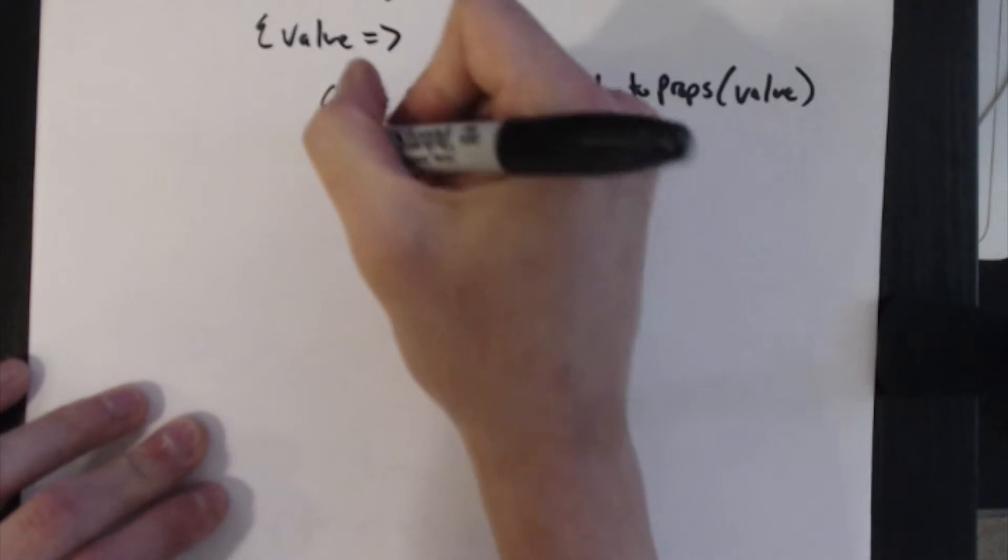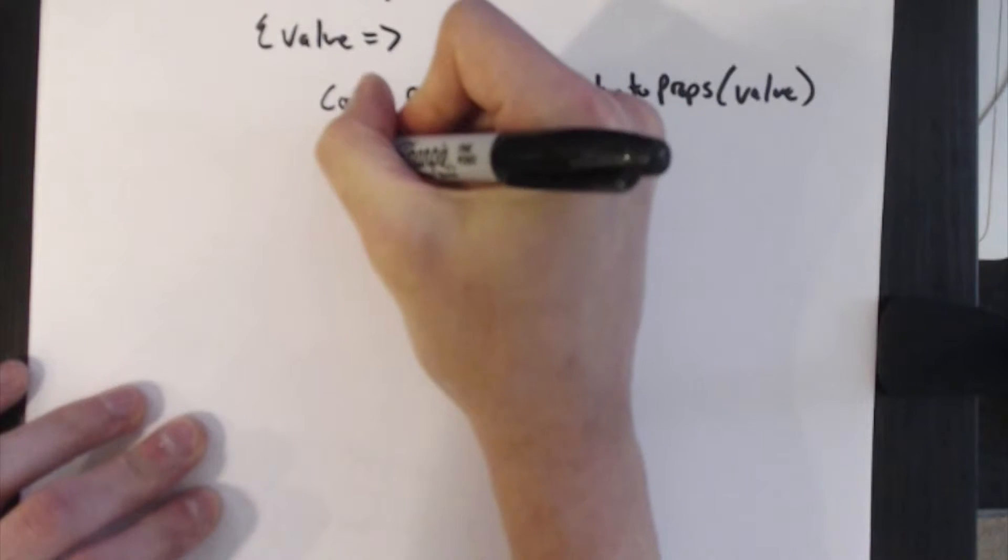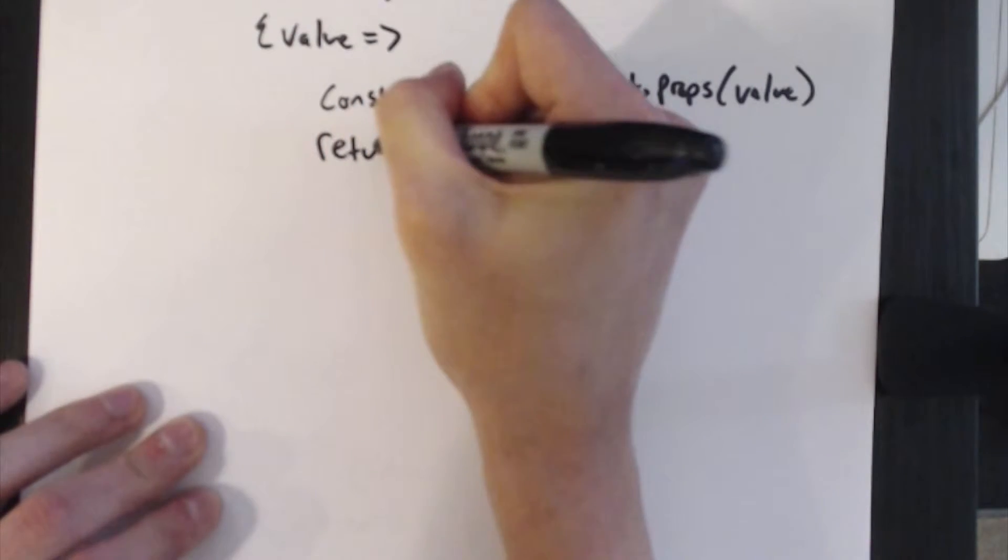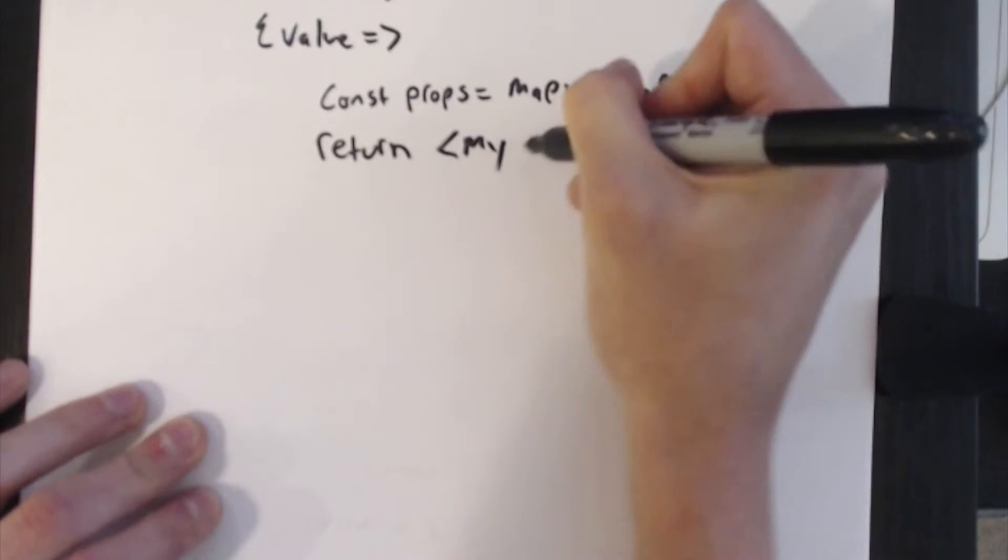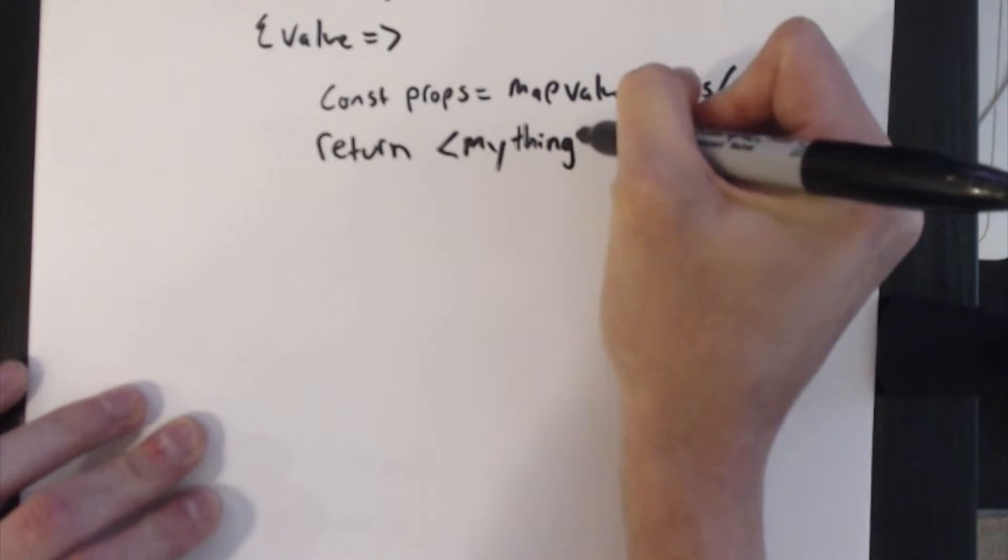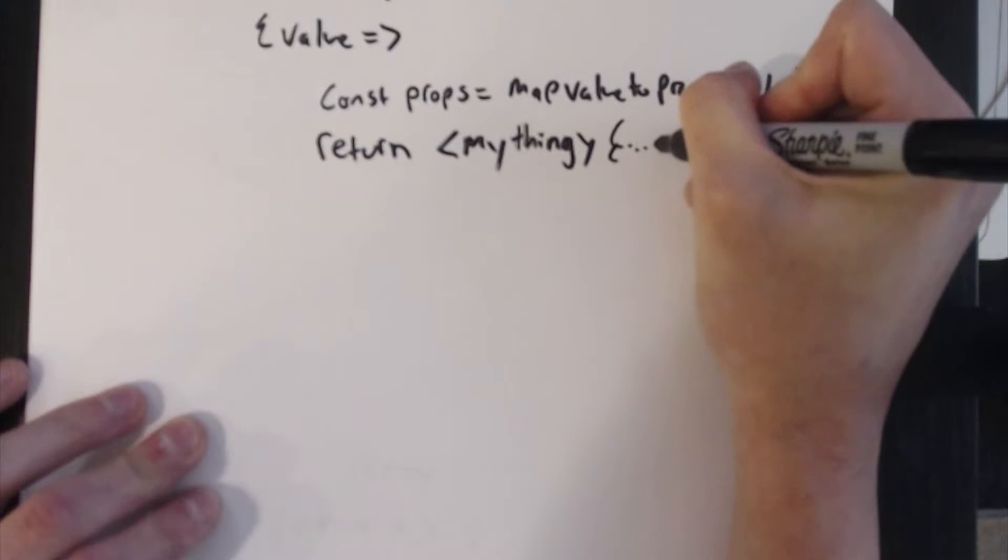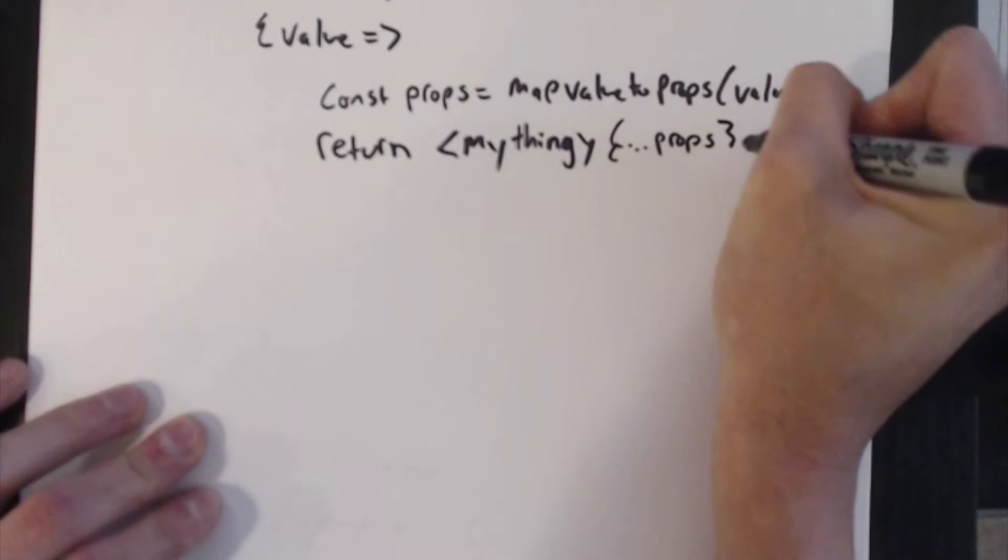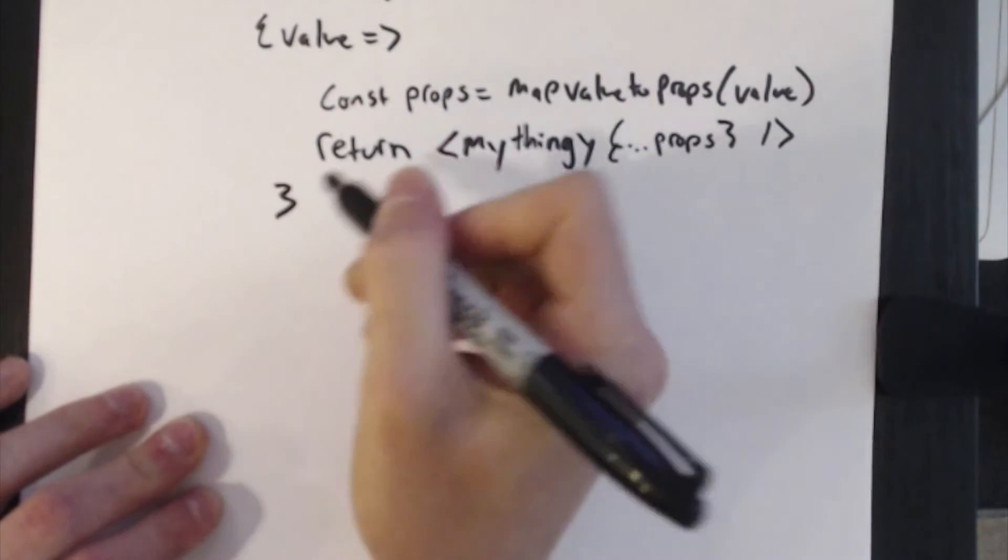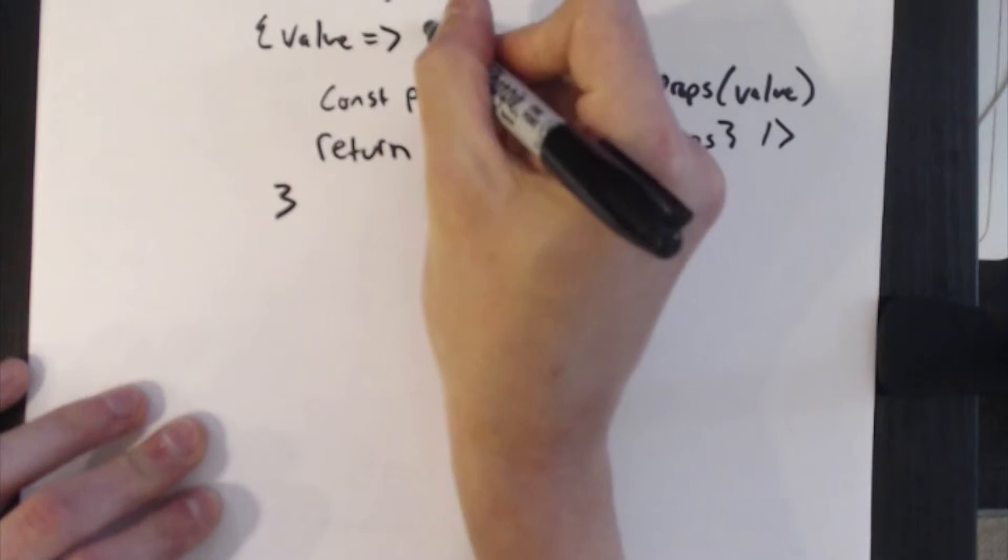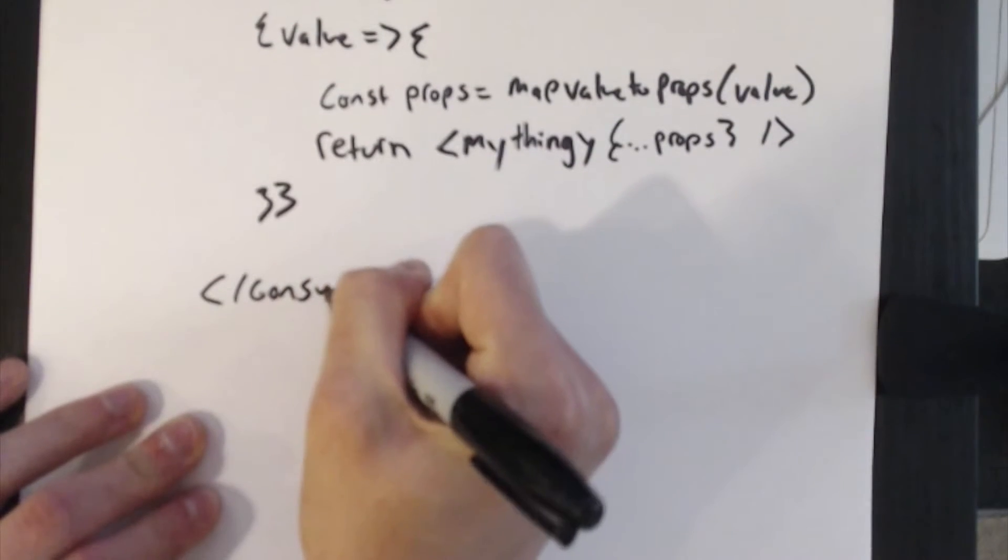That represents the subset of the value we want as the props for our actual component. So that's going to return a partial value, if you will. And then down here we would return your component that's actually consuming the value—in this case my thingy is the name of the component—and we would do a JSX spread of the props object here, which basically takes each key in that object and supplies it as a prop with the equivalent name. So if our mapValueToProps only returns an object with the property foo, then my thingy will only receive a prop called foo.